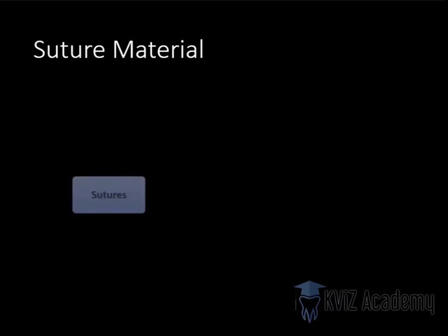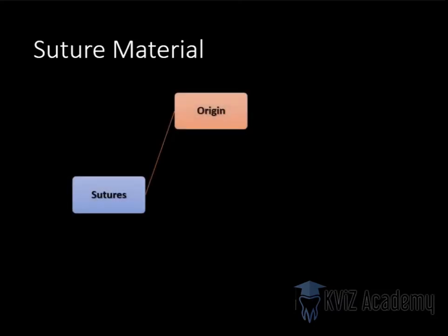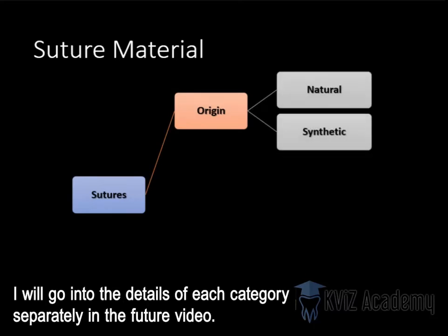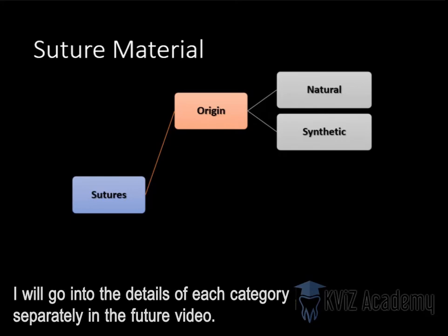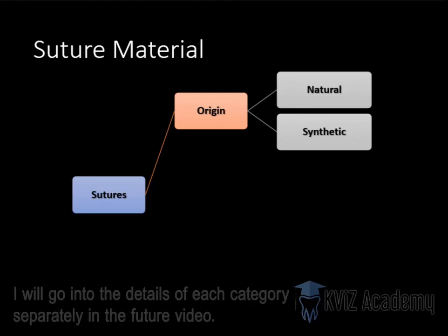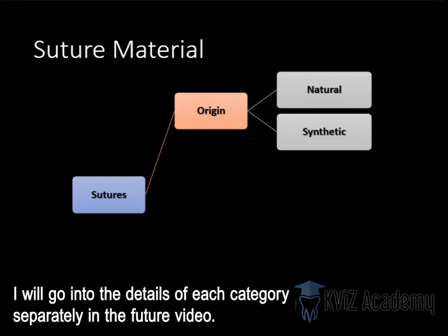Suture material can be classified first based on origin: natural or synthetic. Natural means it already exists in nature — we take it and give it a thread form. Synthetic means we create it in a chemistry lab. Natural is organic and will cause some inflammatory reaction in the body, so these are less preferable. Synthetic materials don't provoke any inflammatory reaction, so synthetic are more preferable in these terms.